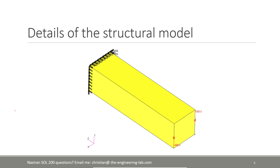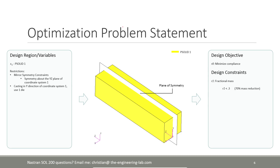Let's quickly talk about how this structure is laid out. We are going to have it fixed on one end, and then we're going to have a torsional load applied on the other end. Here you can see these two loading vectors as I'm drawing them on the screen. Very straightforward. This entire region is associated with PSOLID 1, which is something very critical I'll go over in the next few slides.